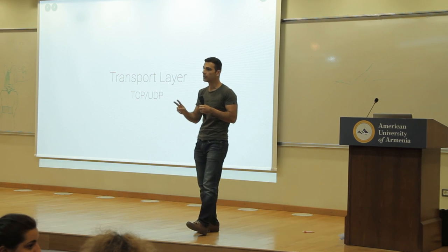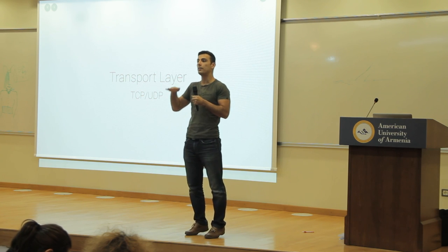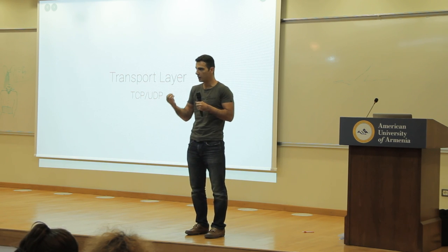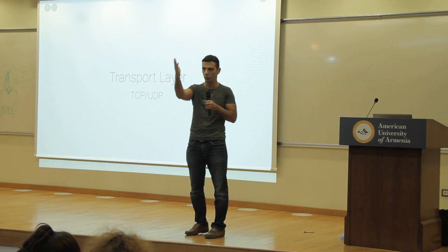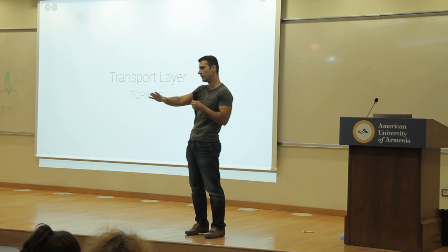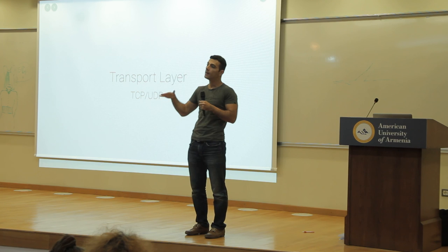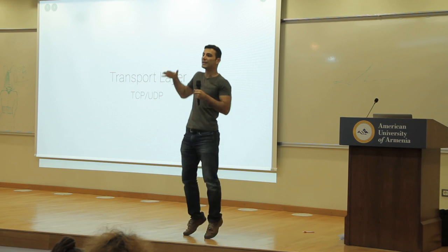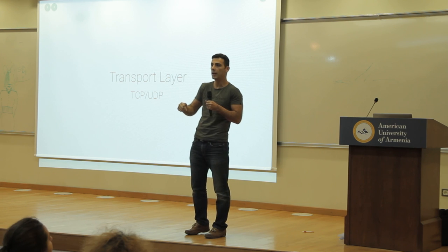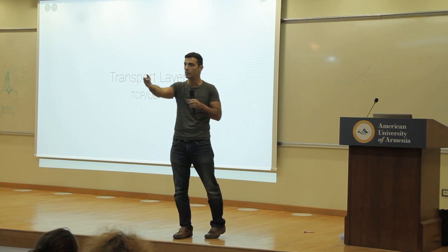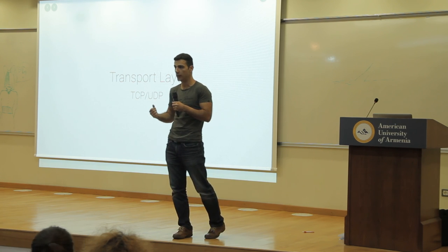So we have two protocols: TCP and UDP. These sit on top of the internet protocol, which simply says give me a packet and I will route it to where it needs to go — here's the standard for the address, here's how I route it. TCP and UDP sit on top of that layer and use the internet protocol — TCP to be reliable, UDP to not be reliable.